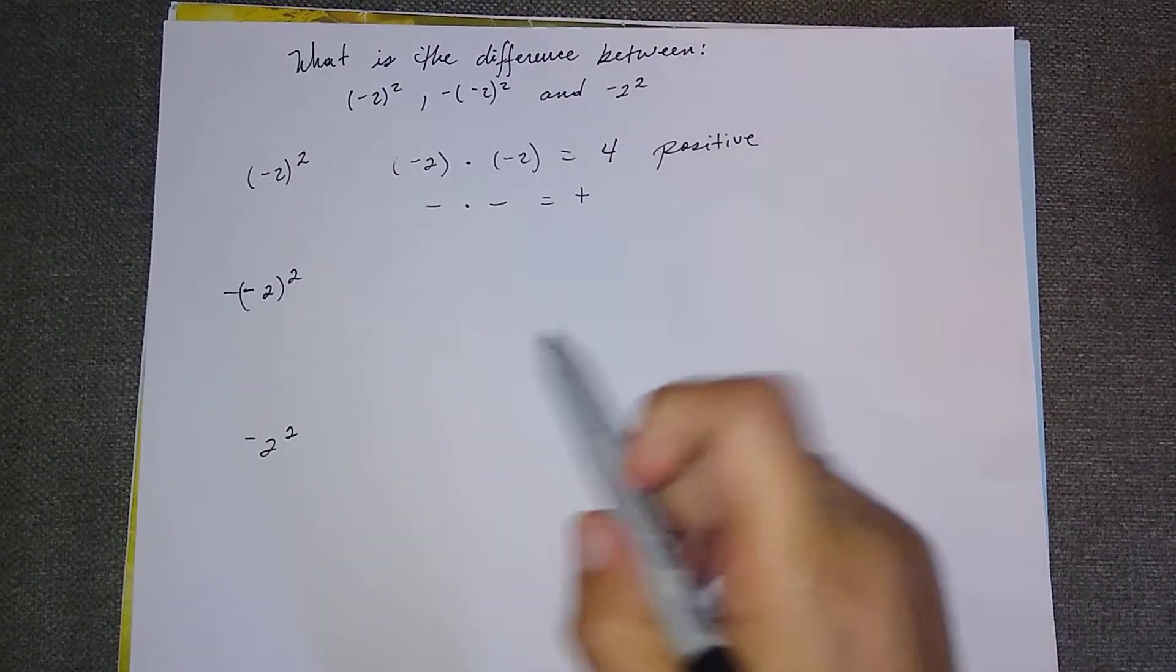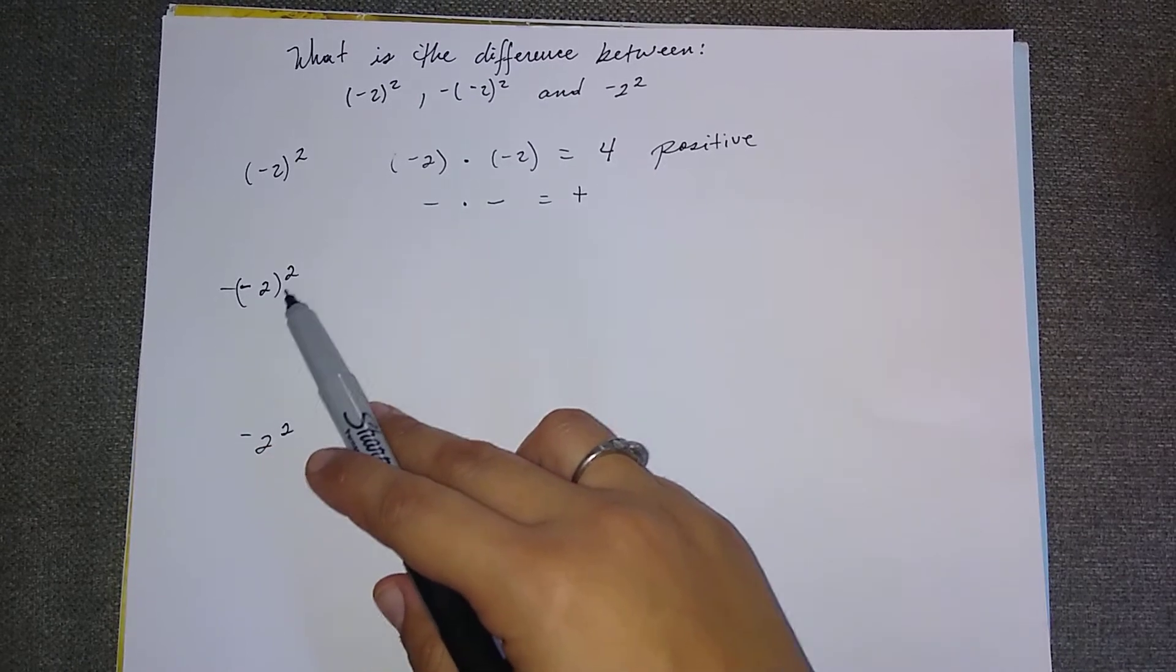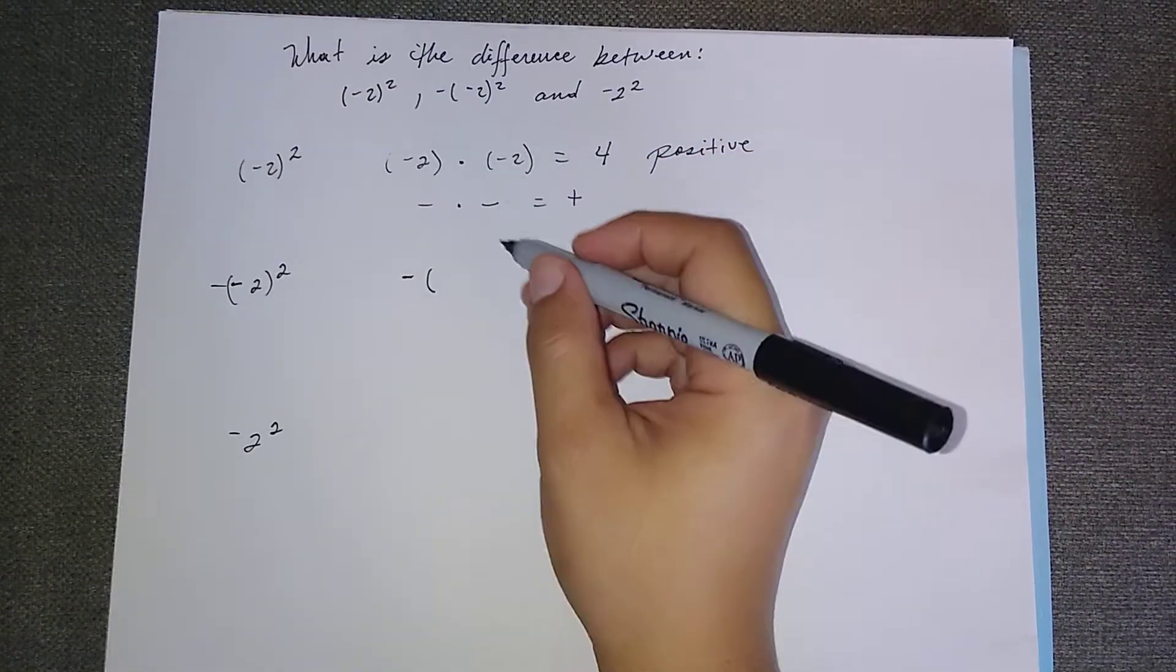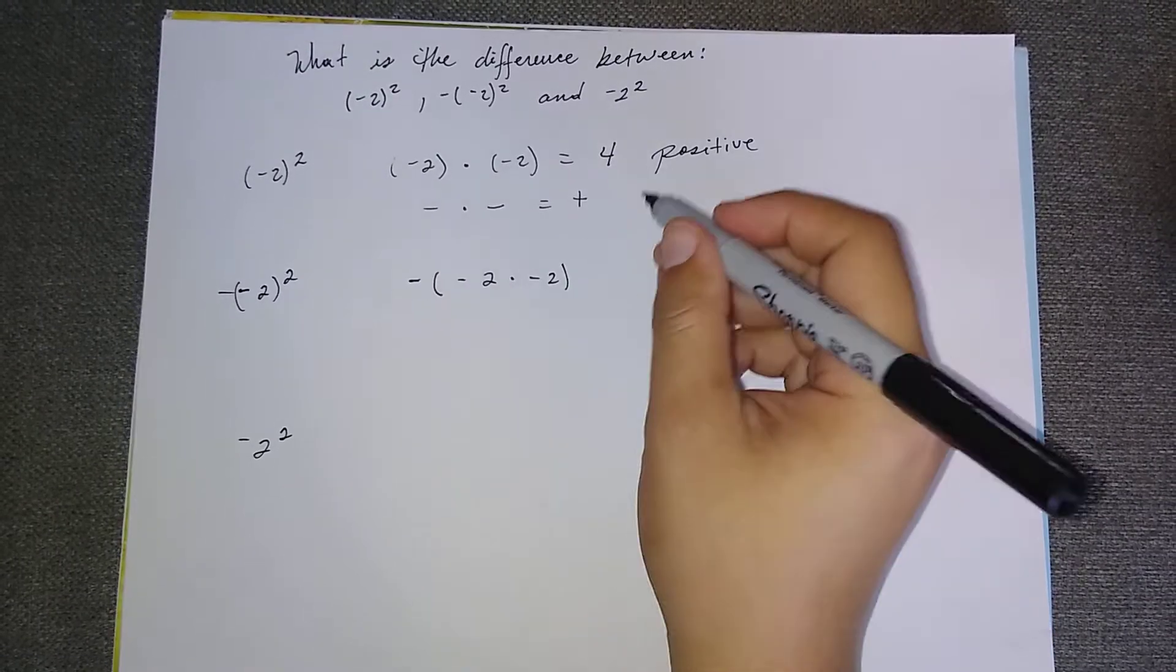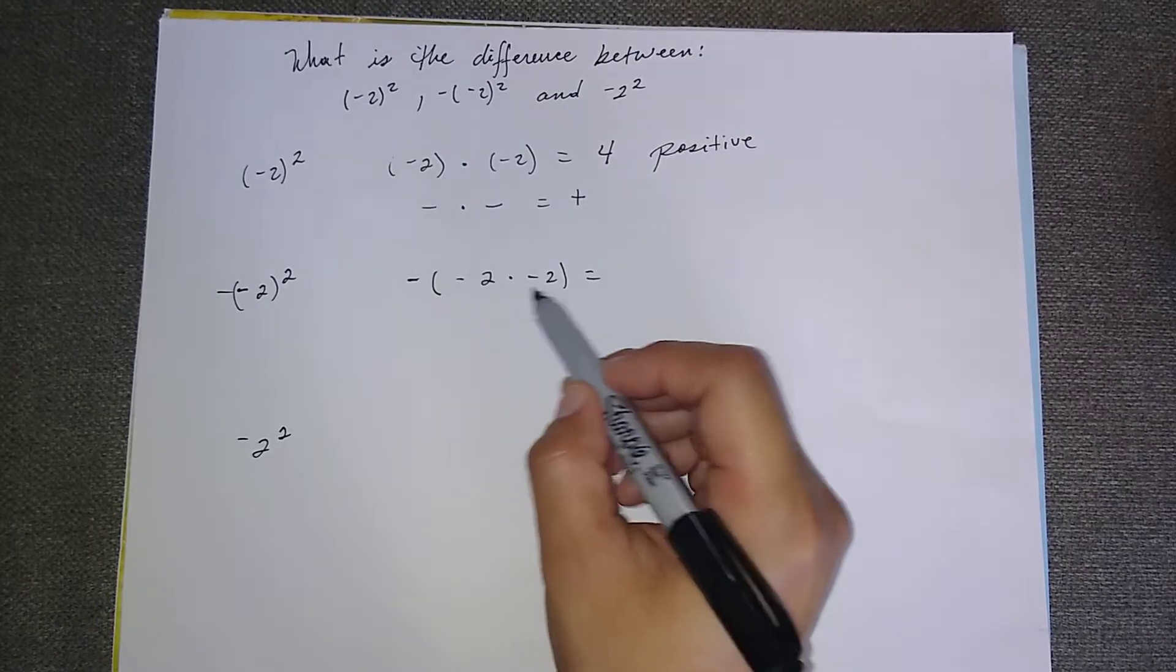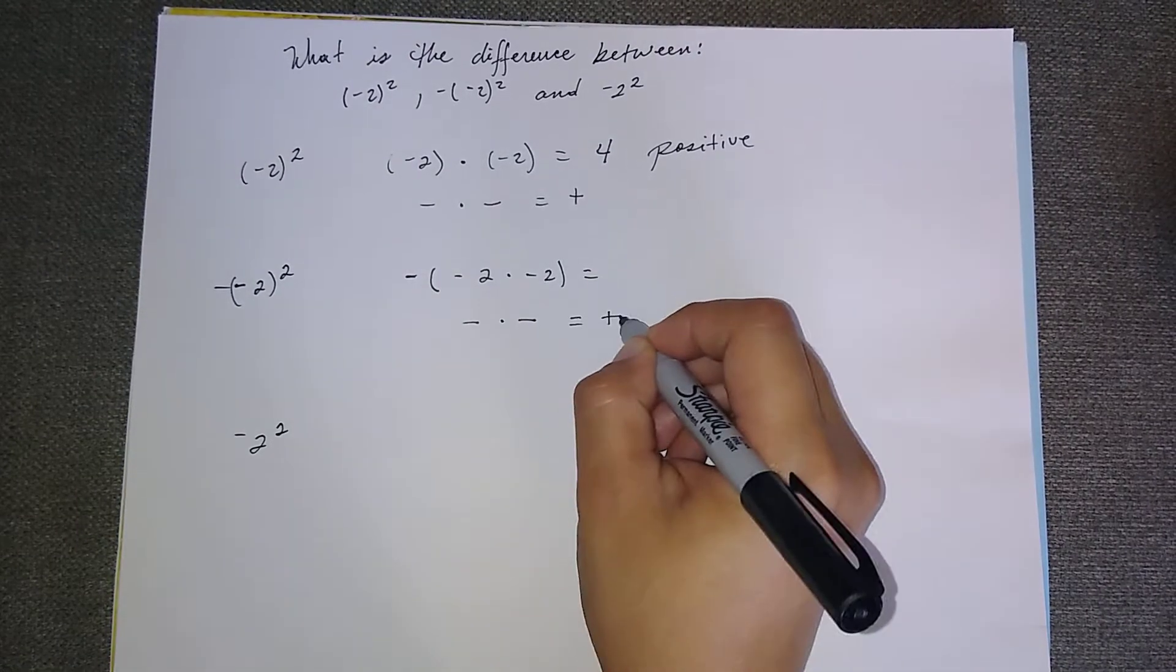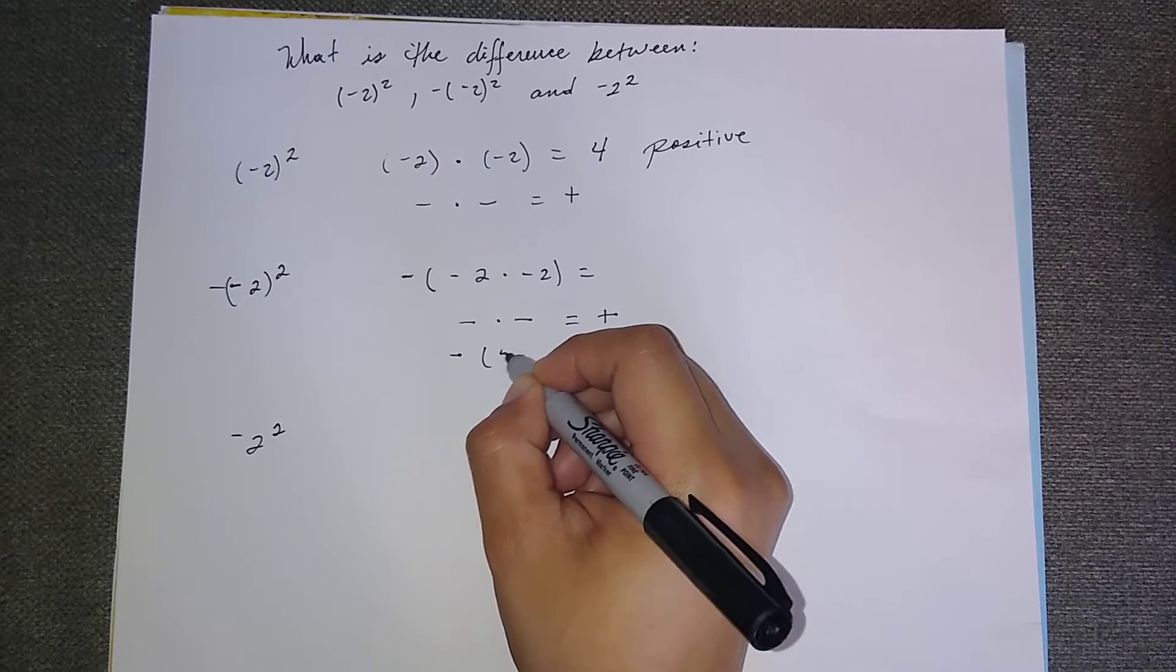Now, the next equation here reads negative parenthesis negative two square. So with this, we have a negative on the outside of the parenthesis, and we have negative two times negative two. Negative two times negative two. So as I said, negative times a negative is a positive. So that we'll write as negative times four.